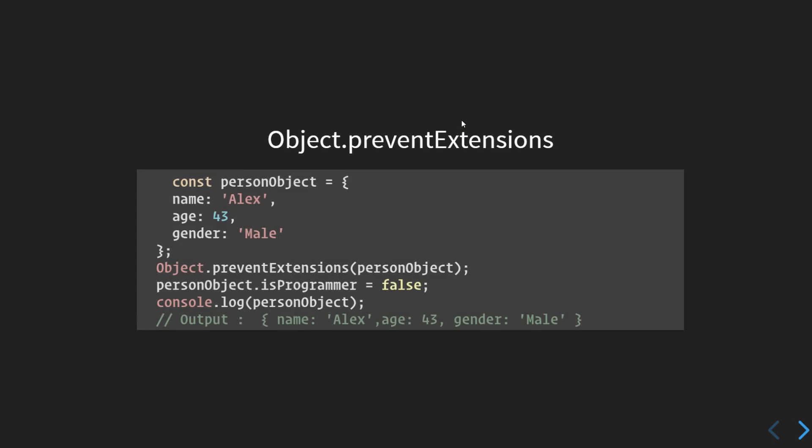The very first one is Object.preventExtensions(). In this example we have a person object where name is set to 'Alex', age is set to 43, and gender is 'male'. Object.preventExtensions(person) — from the definition, this will prevent new properties from ever being added to the object. Whatever structure the object currently has will remain, but you are not allowed to add any new key-value pairs.